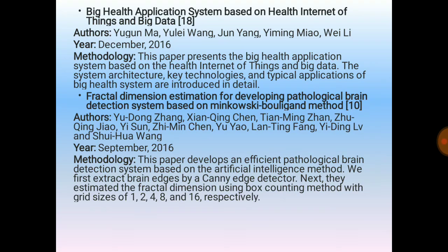Our second literature survey paper is the Big Health Application System based on Health Internet of Things and Big Data. The main authors are Yujin Ma, Yulai Wang, Jun Yang, Yiming Miao and Wei Li, published in December 2016. The methodology presents a big health application system based on the health Internet of Things and big data.